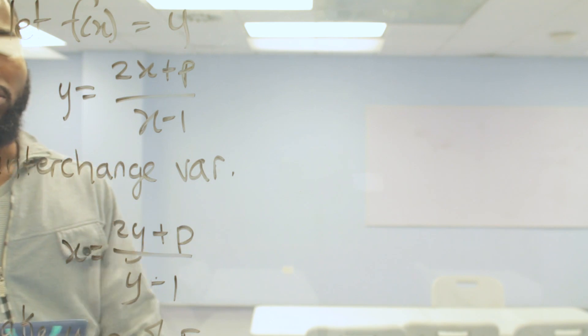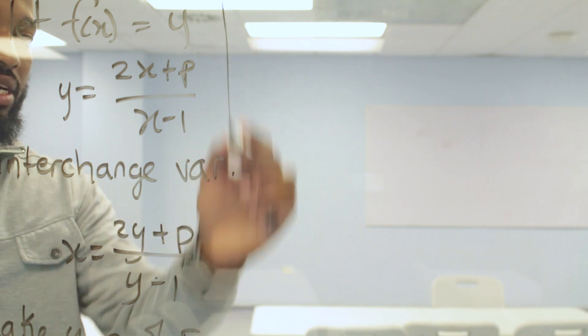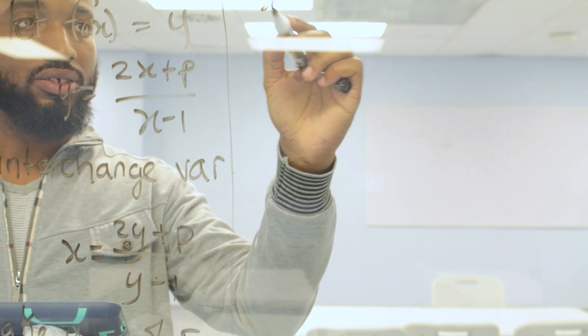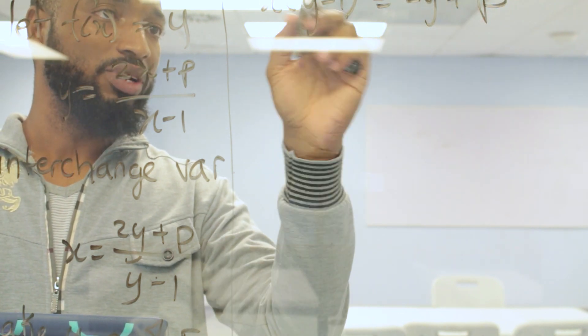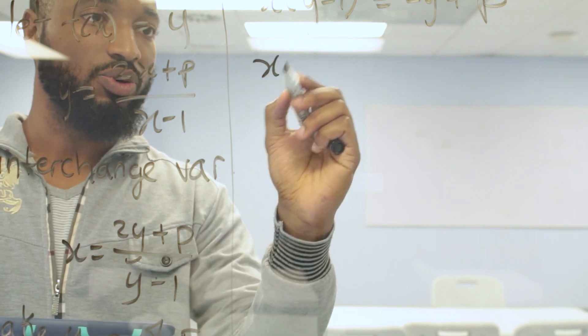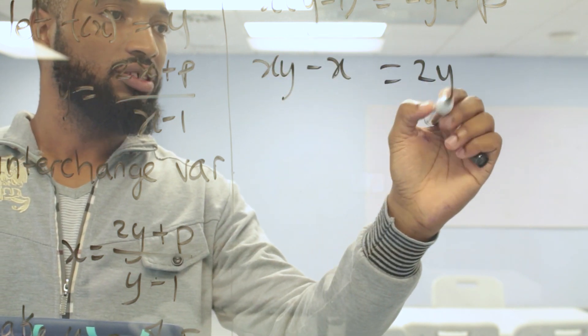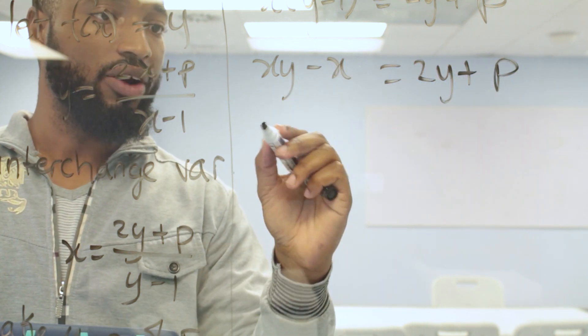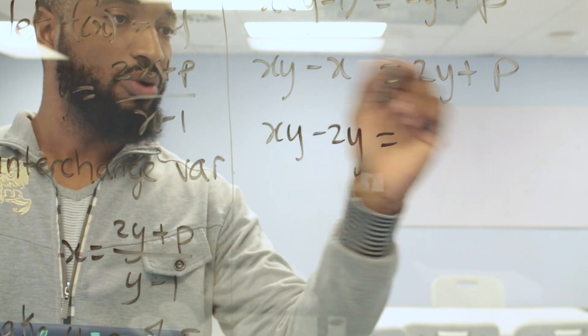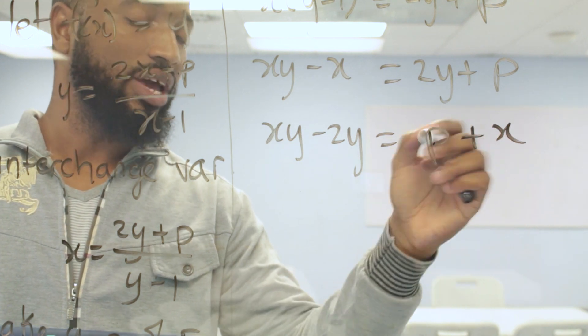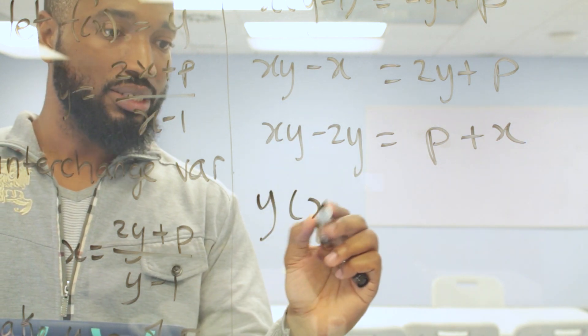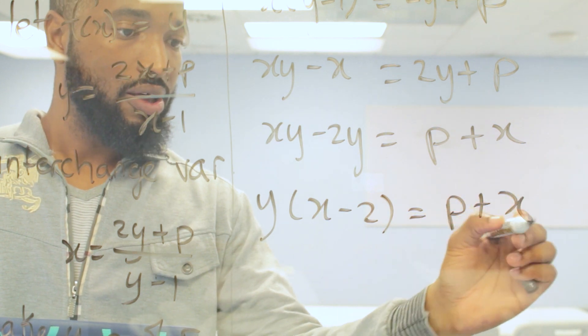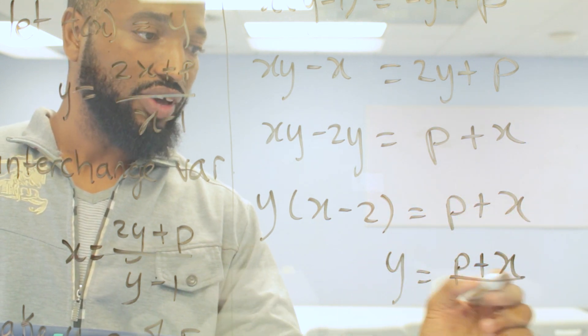So make y subject of formula. Now notice you have two y's there, so it'll be kind of interesting to make that the subject of the formula, but you can do it. First step is to bring across the denominator. So x into y minus 1 equal to 2y plus p. We want all the y's on one side, but we need to get this y out of this situation he's in right now. So we need to expand that bracket. xy minus x equals 2y plus p. Now we can bring the y across. xy minus 2y equal, bring across that, p plus x. Now we can pull out the y by factorizing. So y into x minus 2. And y is going to be equal to p plus x over x minus 2.